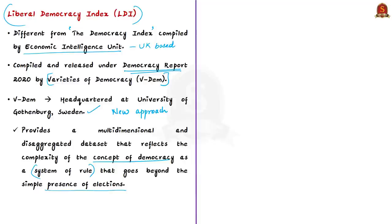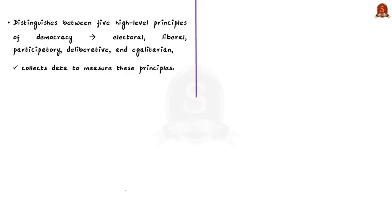The VDEM project distinguishes between five high-level principles of democracy: electoral democracy, liberal democracy, participatory democracy, deliberative democracy, and egalitarian democracy. It collects data to measure these principles and also has separate indices in the democracy report for all these principles.